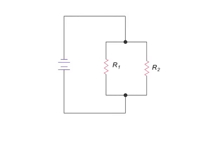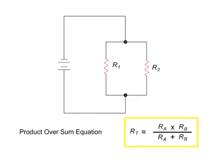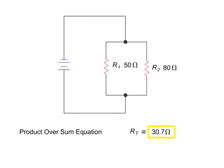Calculating the total resistance of resistors in a parallel circuit requires the use of the product over sum equation. In this parallel circuit, if R1 is 50 and R2 is 80, then the combined or equivalent resistance of the two resistors would be 50 times 80, or 4000 divided by 130, which is 30.7 ohms.